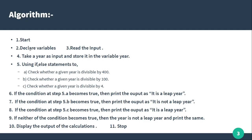Declare variables — this is the variable declaration. Next, read the input and store it in a variable. Then use an if-else statement: we will check whether it is divisible by 400, or next by 100, or next by 4. Based on these if-else conditions, it will output whether it is a leap year or not. Next, display the output and the calculation stops.